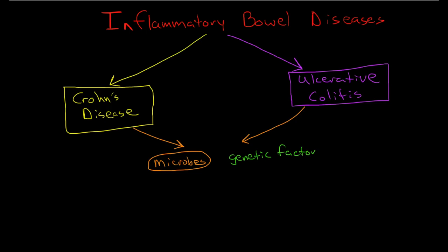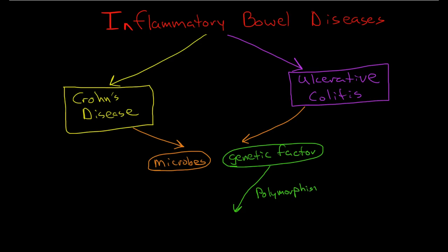We don't know specifically which genetic factors are involved, but there are twin studies suggesting that there is a strong inherited component to inflammatory bowel disease. The genes we've zeroed in on so far are polymorphisms — relatively common variants of genes that occur in 1% of the population or more. This is different from a rare mutation, which would be much less than 1%. These are polymorphisms that cause increased inflammation.